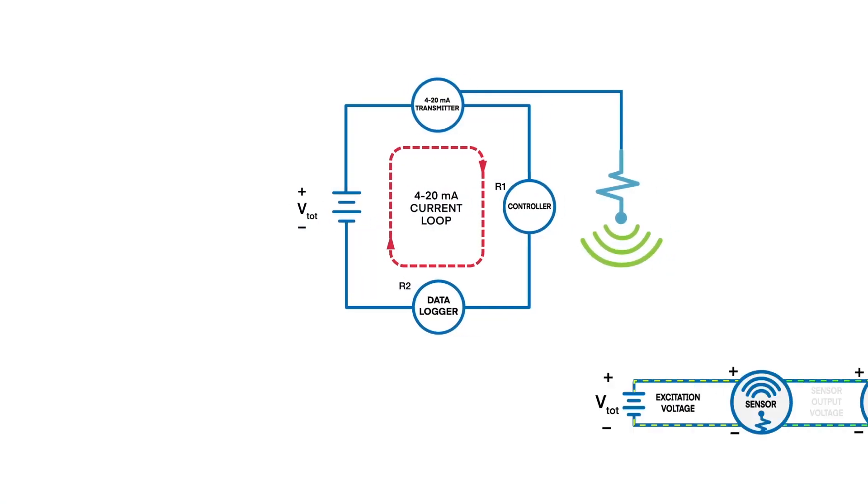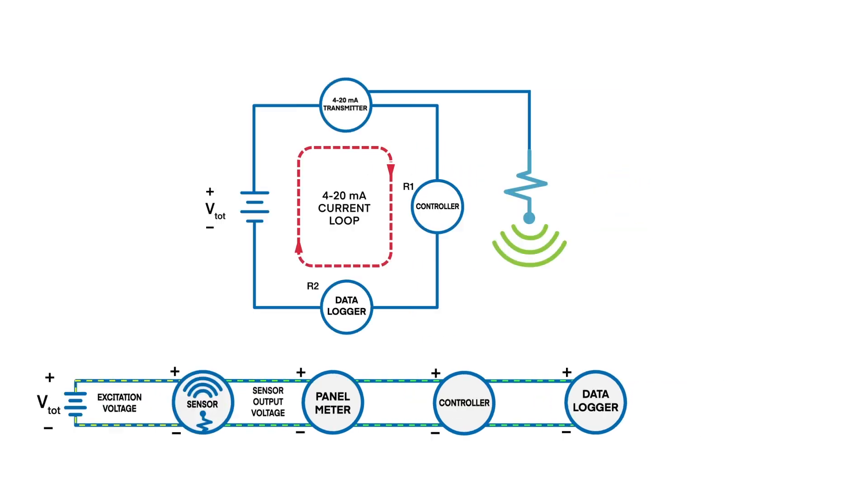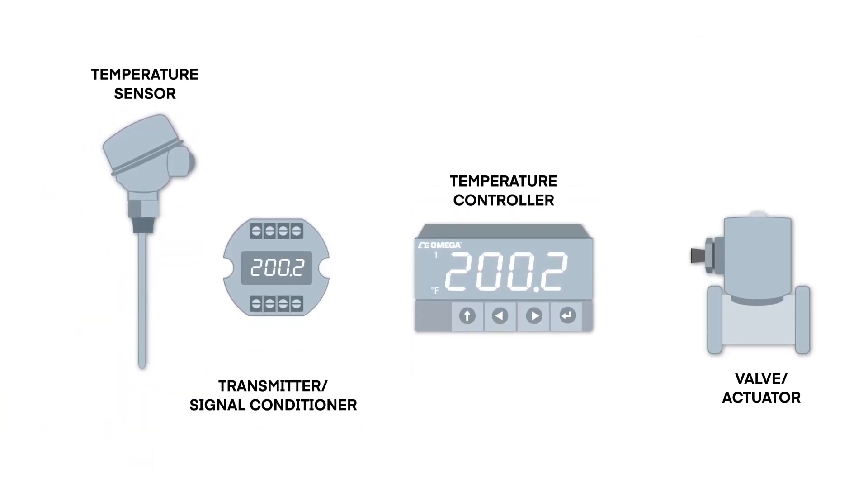Whether operating on 4 to 20 milliamp or DC voltage signals, without outboard signal conditioning, transmitting hardware, and expensive shielded cable, DC voltage signals are highly susceptible to interference from electrical noise.